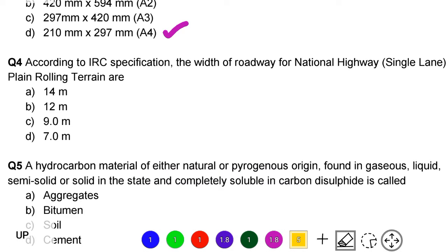Next question: according to IRC specification, the width of roadway for National Highway single lane in the plain rolling terrain are. Option A: 14 m. Option B: 12 m. Option C: 9 m. Option D: 7 m. The correct answer is option B, 12 m.